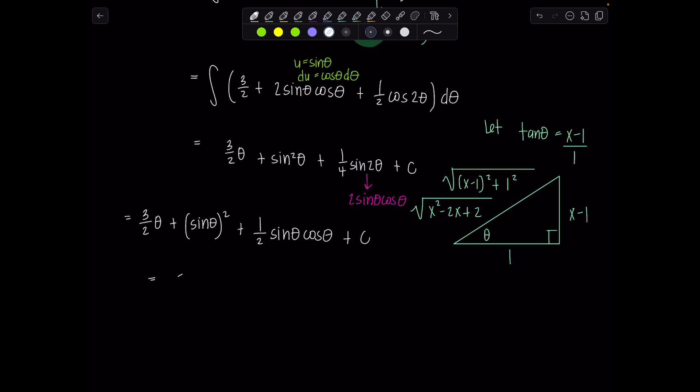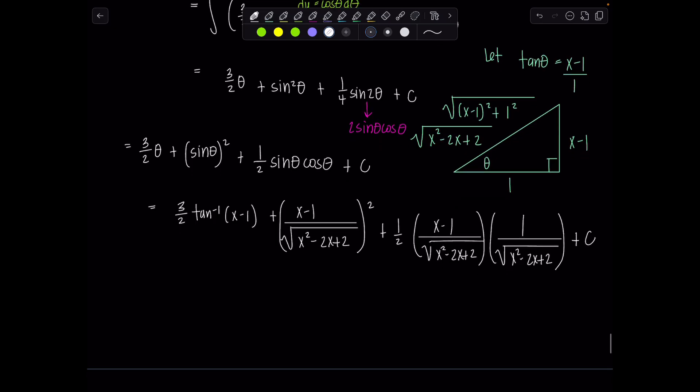Okay, now let's use our triangle. So 3 halves theta, that's just going to be 3 halves. When you have the angle by itself, come back. Say, who did I decide to use for the trig sub tan theta? So then theta is just going to be tan inverse of x minus 1 plus sine of theta squared. So sine of theta is ratio of opposite over hypotenuse. So we've got x minus 1 over radical x squared minus 2x plus 2 squared plus 1 half sine theta. So again, x minus 1 over rad x squared minus 2x plus 2 times cosine theta. That's adjacent, which is 1 over rad x squared minus 2x plus 2 plus c.